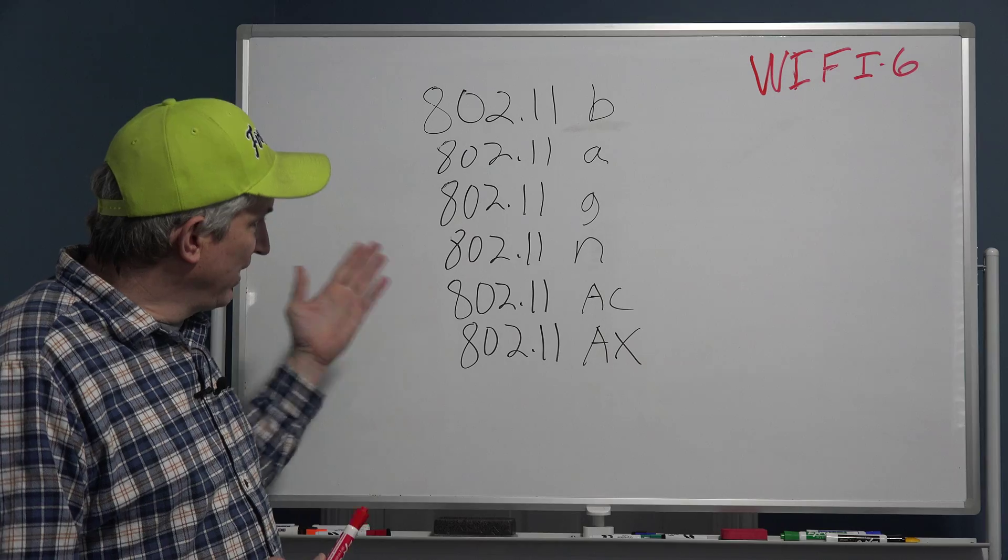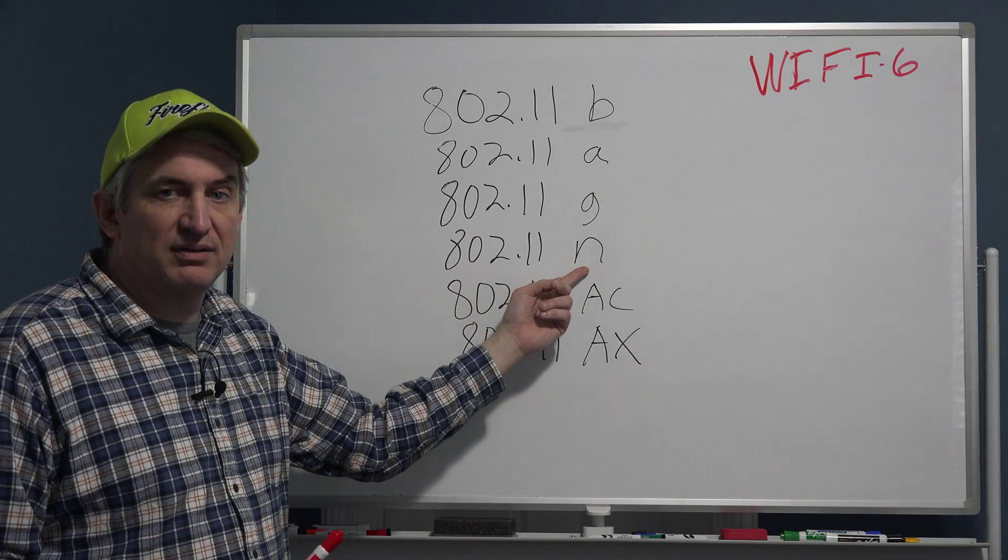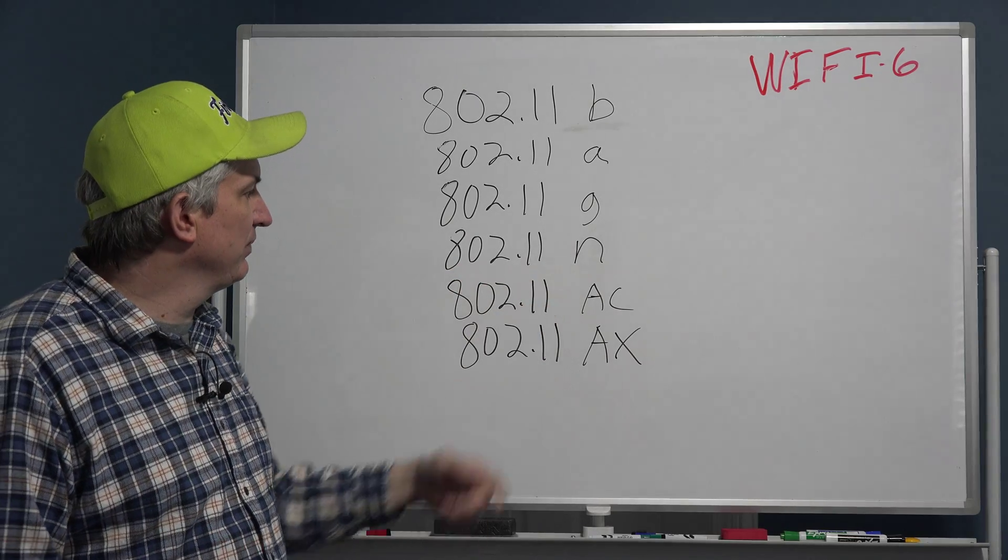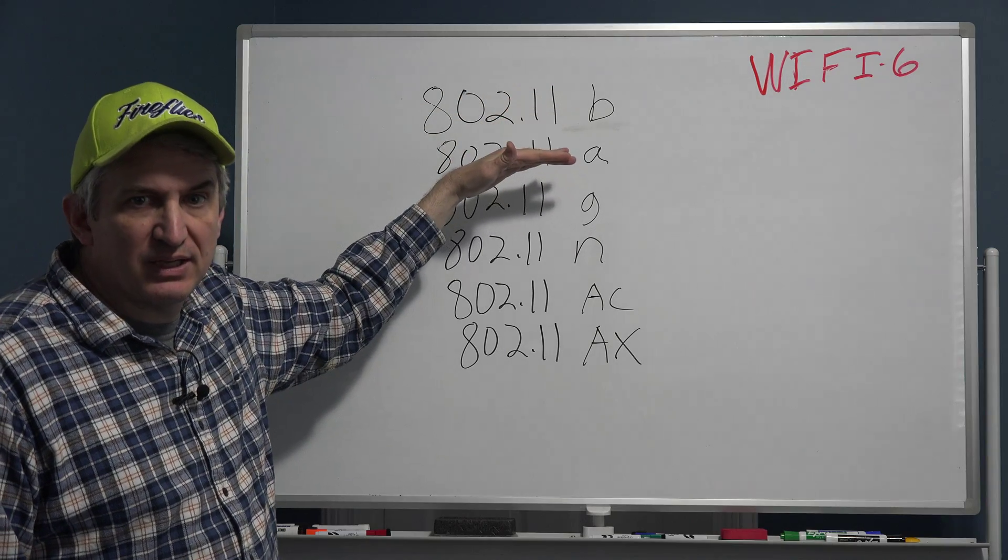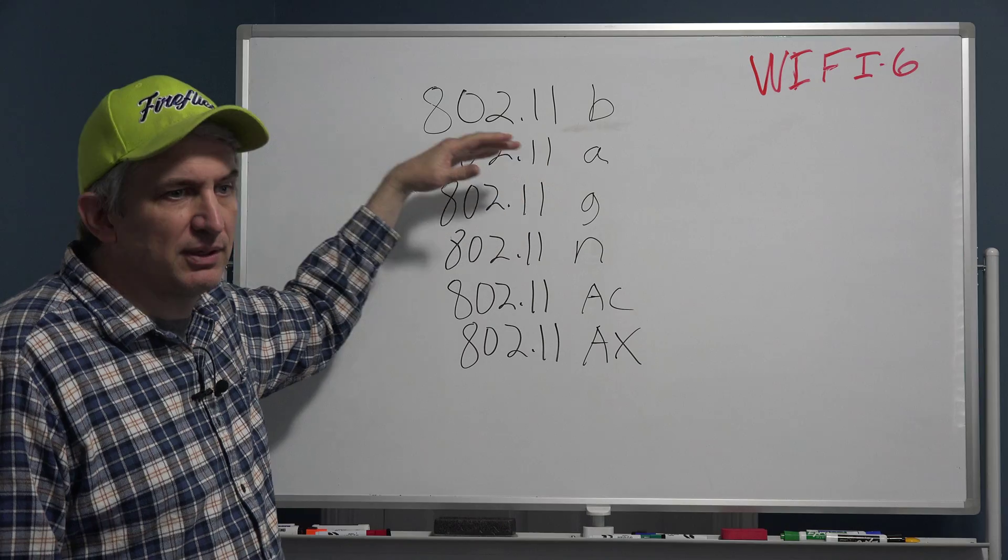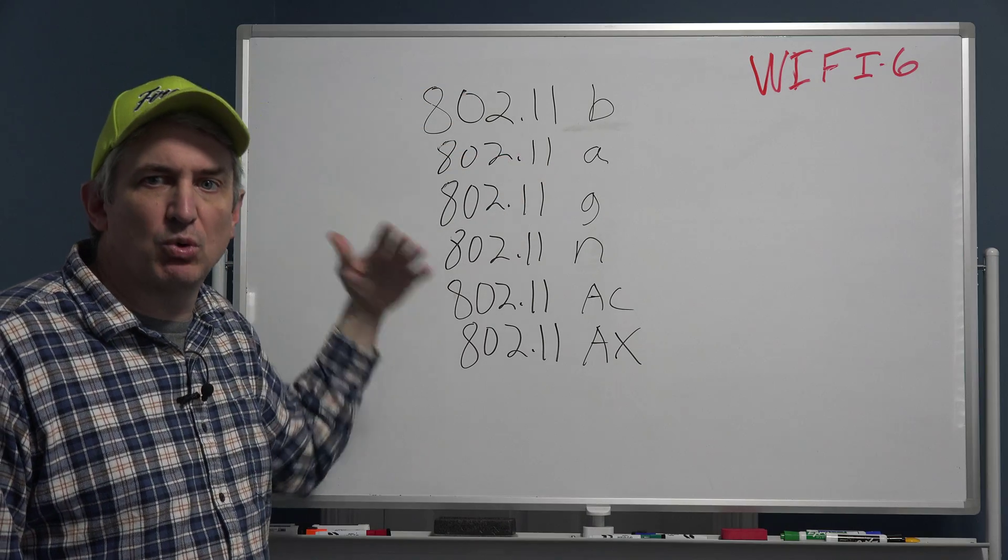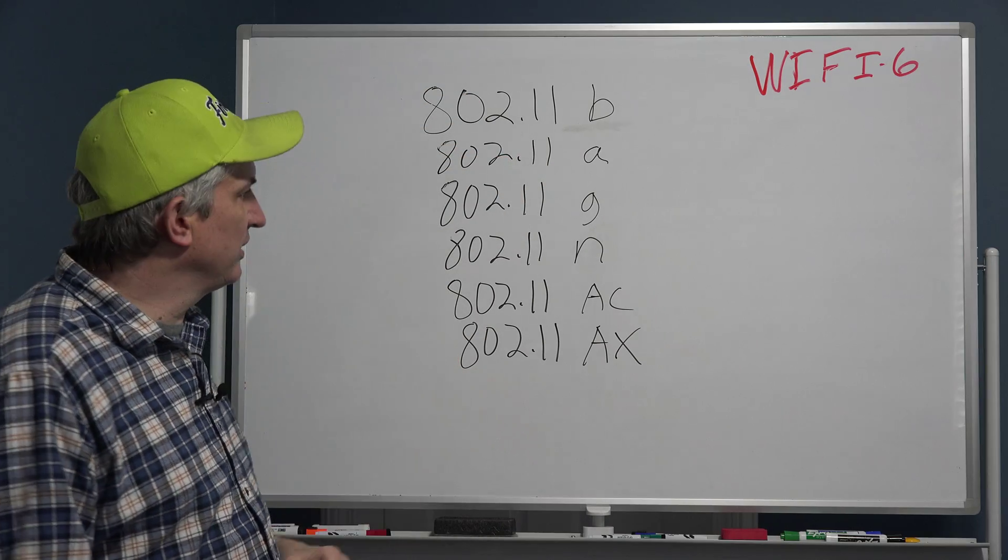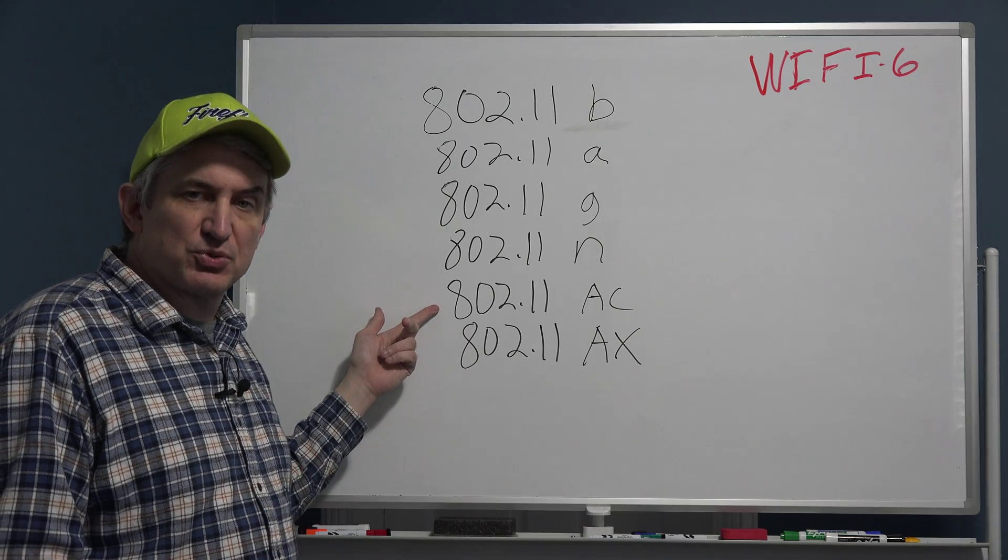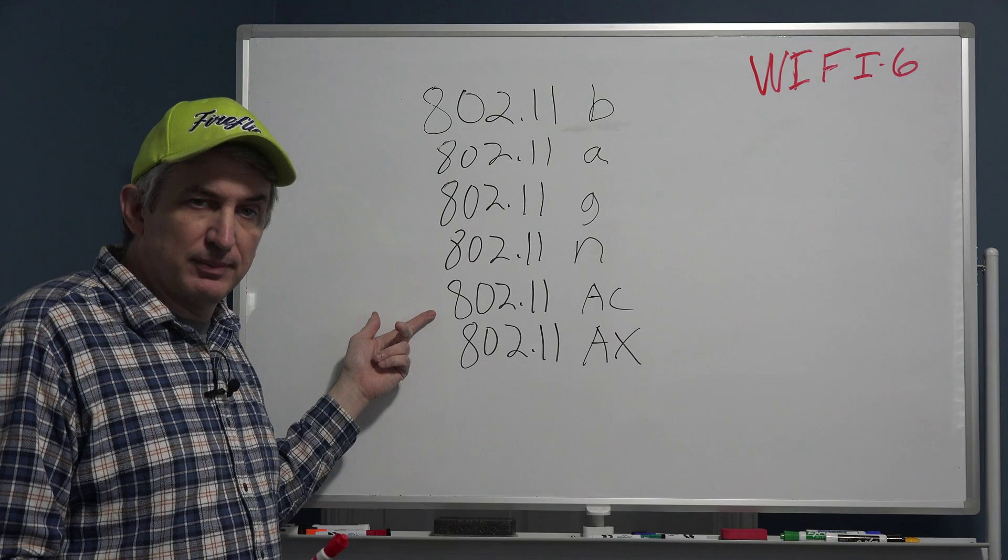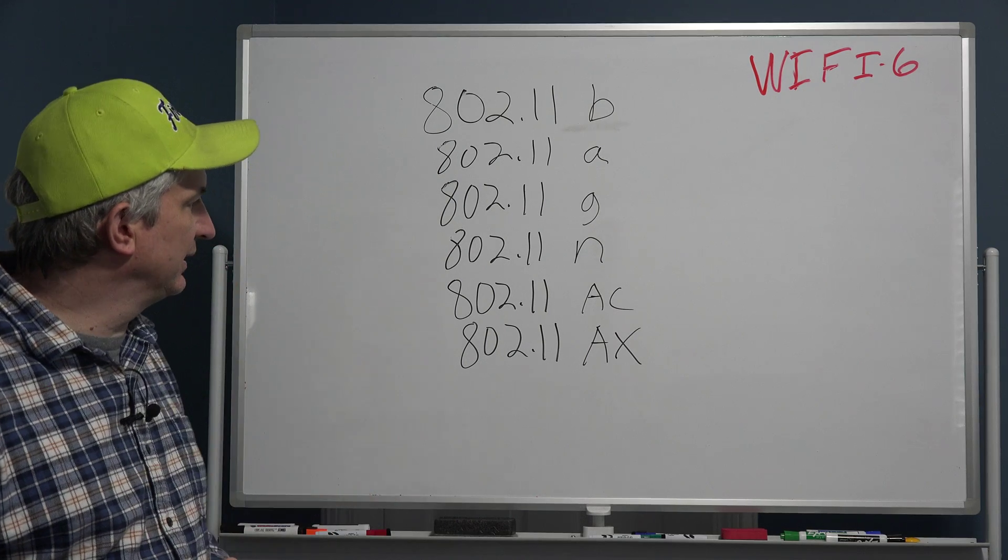As you go down you get better range, better throughput, better coverage, more reliable connectivity. 802.11ac, that's the most recent one that we've been on that is widely used now. It works very well and almost all the latest devices have wireless AC.